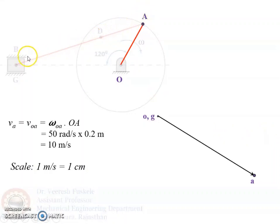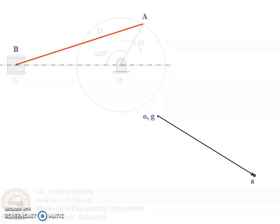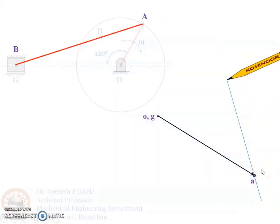Next, we have to draw the velocity of B relative to A, or the link AB. We know that the velocity of link AB will be perpendicular to the link, but we do not know the magnitude of this velocity. So we will just draw a line perpendicular to link AB with the help of the set square. We place the set square on link AB so the other side passes through point A, and we draw the velocity vector through point A. We draw a line representing the velocity vector of link AB — we still do not know the magnitude, so we proceed further.